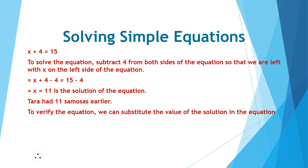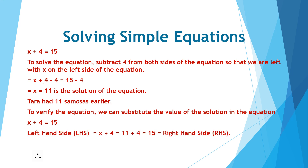To verify the equation, we substitute the value of the solution. The equation is x plus 4 equals 15. LHS equals x plus 4 and the solution is x equal to 11, so we write 11 for x. Therefore 11 plus 4 equals 15, which equals RHS. Left hand side equals right hand side, and the solution is correct.